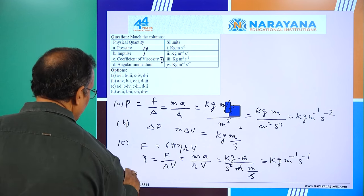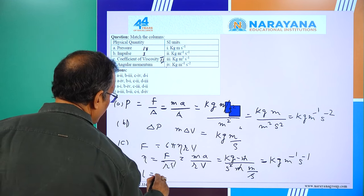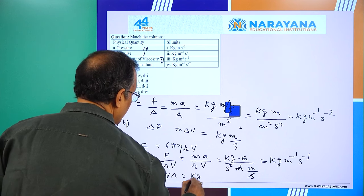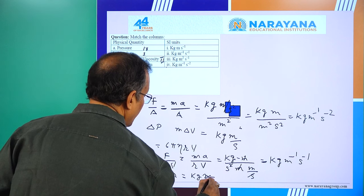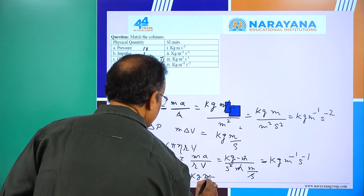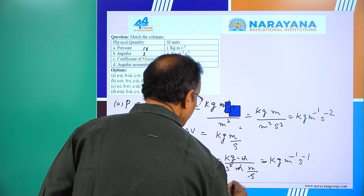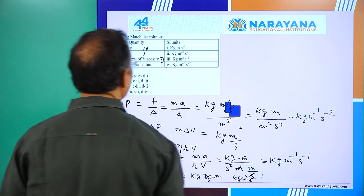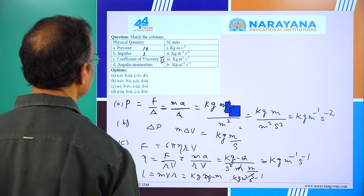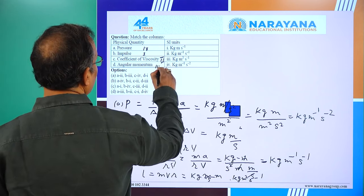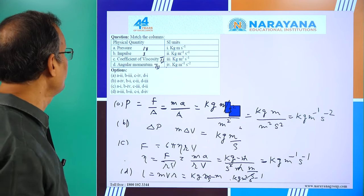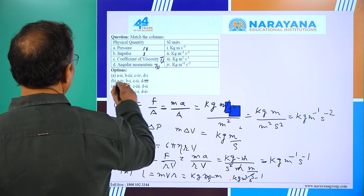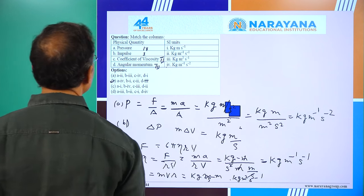For angular momentum, L = MVR. Units are kg × (m/s) × m = kg·m²·s⁻¹. This matches number 3. So the correct matching order is 4, 1, 2, 3, and the answer is B.